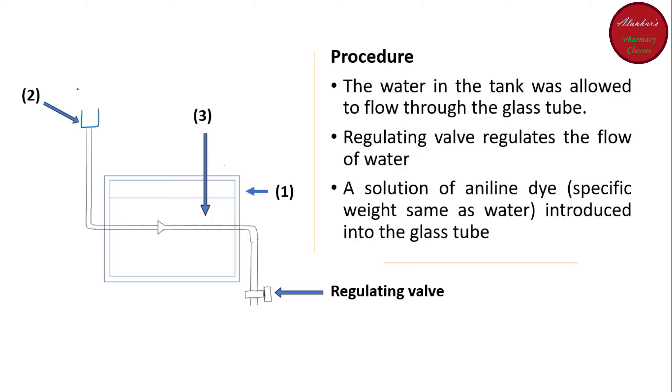So, initially what he has done, he kept dye over here. And he allows the dye to mix with this water through a very fine bottleneck valve. As you can see, this is the glass tube. And the dye is mixing into the glass through a very fine hole which is located almost center here. Through this valve, the dye is actually mixing with the water. And the flow of water is like this. And the flow of water is regulated by using this regulating valve. And he has used actually the aniline dye for the experiment.